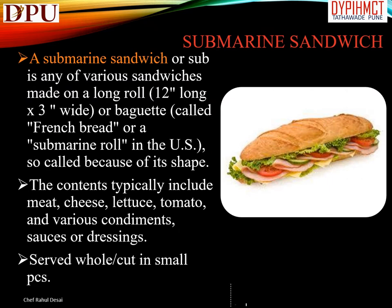A submarine sandwich, or sub, is any of various sandwiches made on a long roll (12 inches long by 3 inches wide), called French bread or a submarine roll. In the US, it is so called because of its shape. The contents typically include meat, cheese, lettuce, tomato, and various condiments, sauces, or dressings, and is served whole or cut into small pieces.